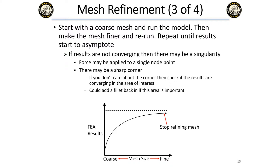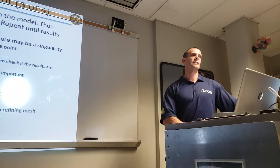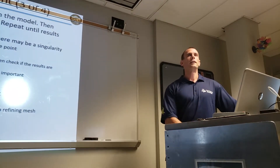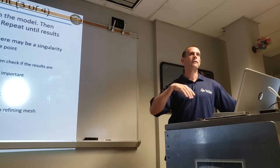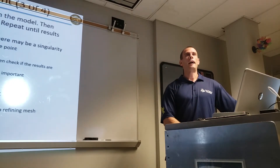You need to find convergence. Run a coarse mesh, get your results, then make it a little finer — maybe ten percent denser — and look at your results again. You have to wait until it's converging. For example, if you're looking at stresses and your first run shows 30 KSI, then 38, then 40, then 40.5, you're probably converged. It's good to plot it out in Excel quickly to see the pattern.